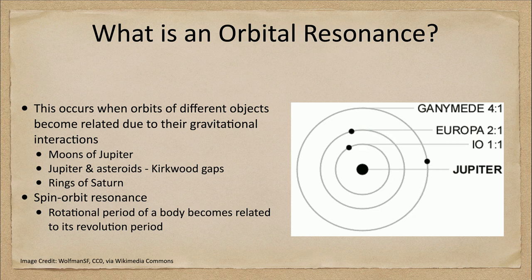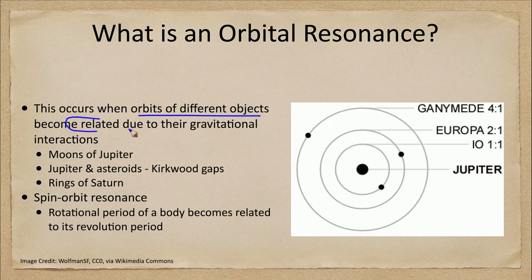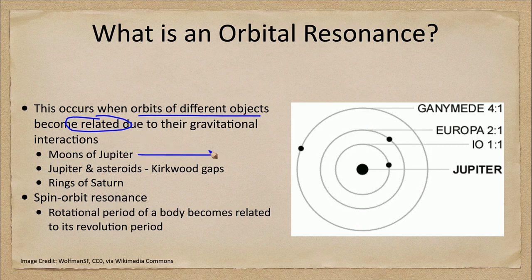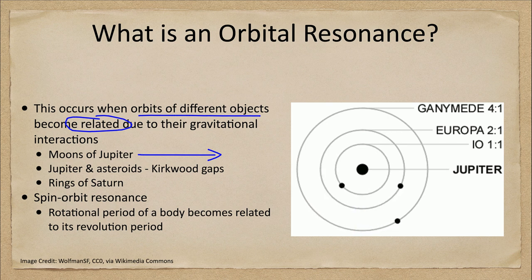We can see a couple different types of these. The first type we want to look at occurs when orbits of different objects become related because of their gravitational interactions. We see one example with the moons of Jupiter. If you look at the moons of Jupiter, we have Jupiter at the center, then Io, Europa, and Ganymede.